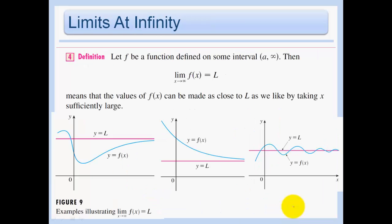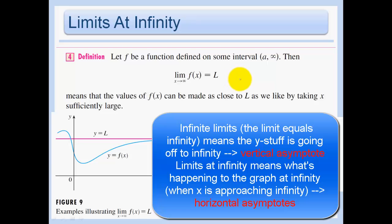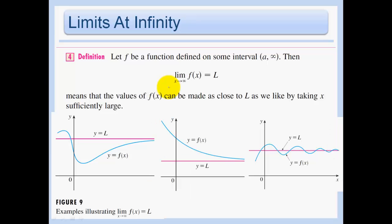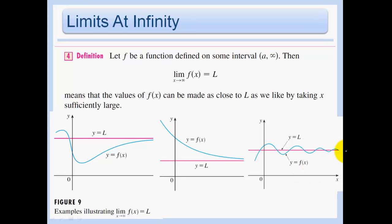Now let's look at limits at infinity. The difference is: instead of the limit equaling infinity, we have the limit as x approaches infinity. So instead of looking at vertical asymptotes, we're now looking at horizontal asymptotes. In all three figures, we have a horizontal asymptote at y = L. Note that a horizontal asymptote doesn't necessarily mean the graph doesn't pass through that line — it just means the function is approaching that value.